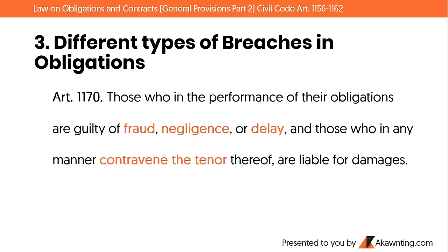Different types of breaches in obligations — based on Article 1170: those who in the performance of their obligations are guilty of fraud, negligence, or delay, and those who in any manner contravene the tenor thereof, are liable for damages. The four types of breaches are: 1) fraud, 2) negligence, 3) delay, and 4) contravention of the terms of the obligation.